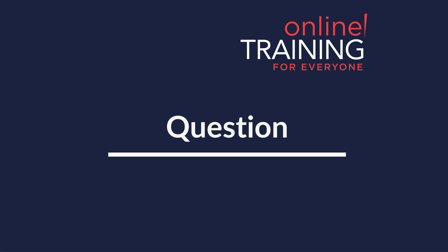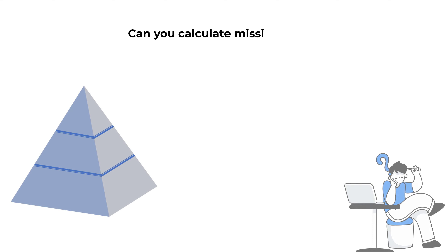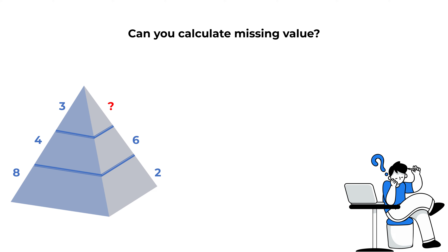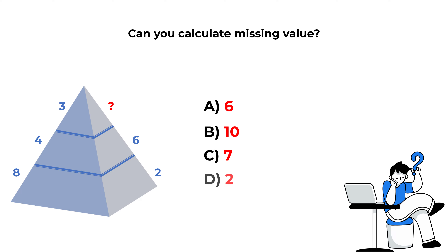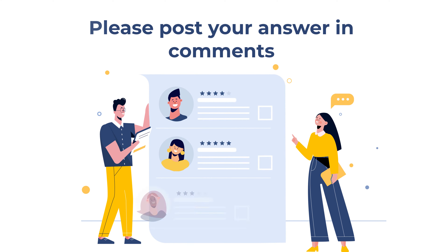Here's a practice question. You're presented with a triangle broken into three equal horizontal parts. On the left side you see numbers 8, 4, and 3 (bottom to top), and on the right side numbers 2, 6, and one number is missing. Select the missing number from four choices: A) 6, B) 10, C) 7, D) 2. Post your answer in the comments so I can give you feedback.